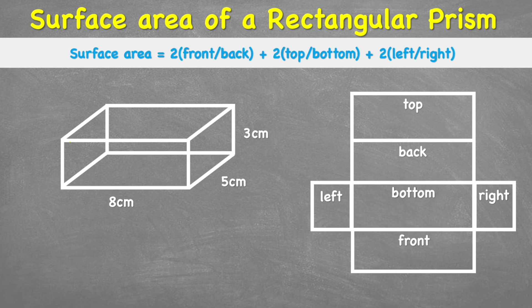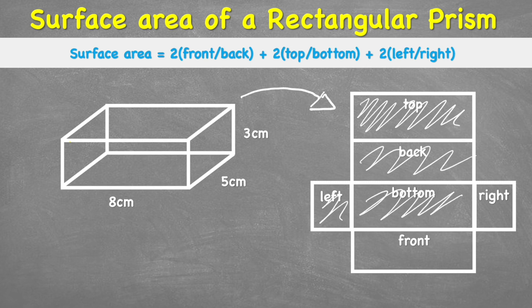And the surface area is essentially, if we turn this shape into its net form, make it flat, make it a 2D shape, we want to measure the area that it takes up on a surface. So we're going to have to calculate all of these individual faces in order for us to calculate the total area.